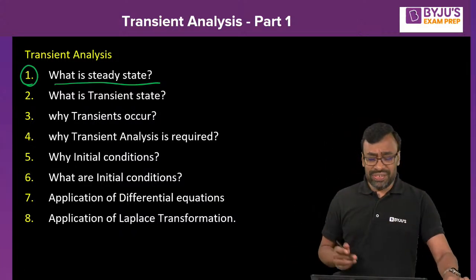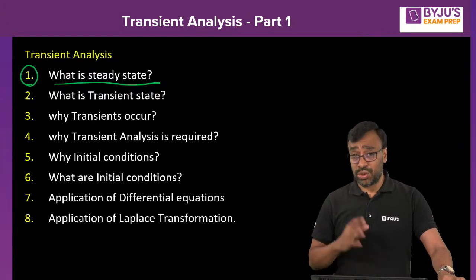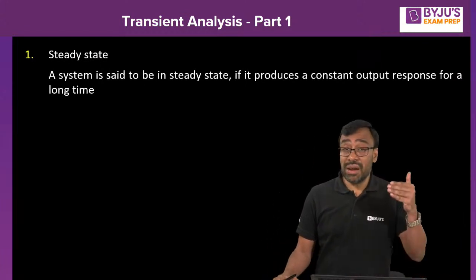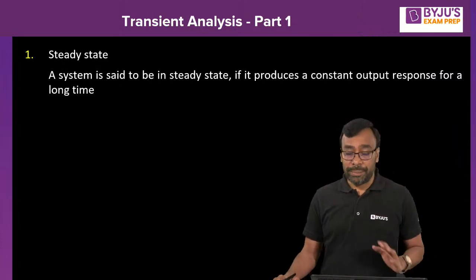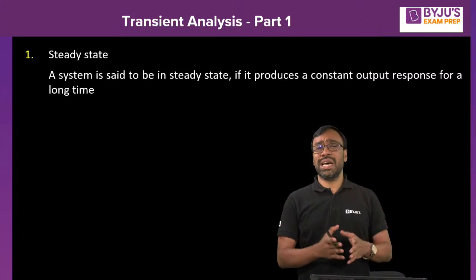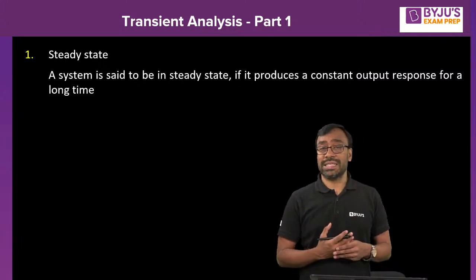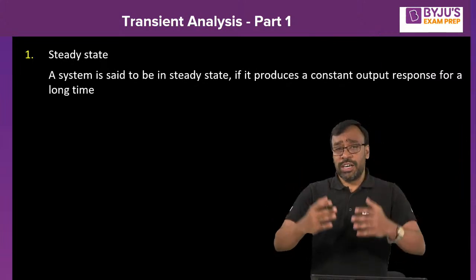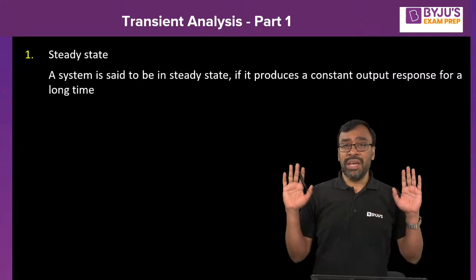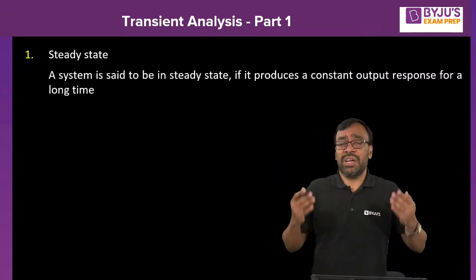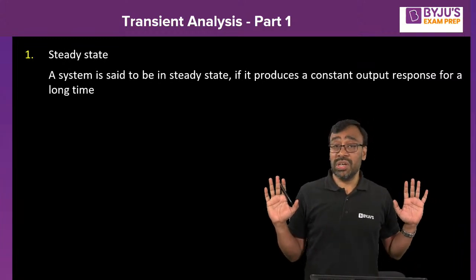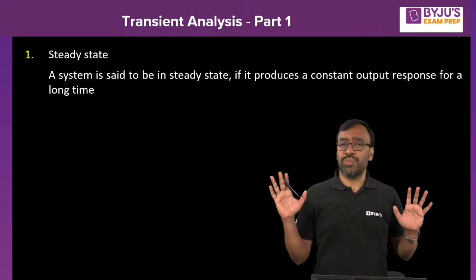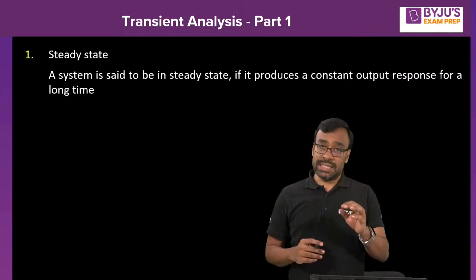What is steady state? A system is said to be in steady state if it produces a constant output response for a long time. For example, a fan rotating at 1000 RPM continuously is in steady state. You riding a bike at 80 kmph continuously for a long time — your automobile is in steady state. Any system producing a constant output response for a longer time is said to be in steady state.